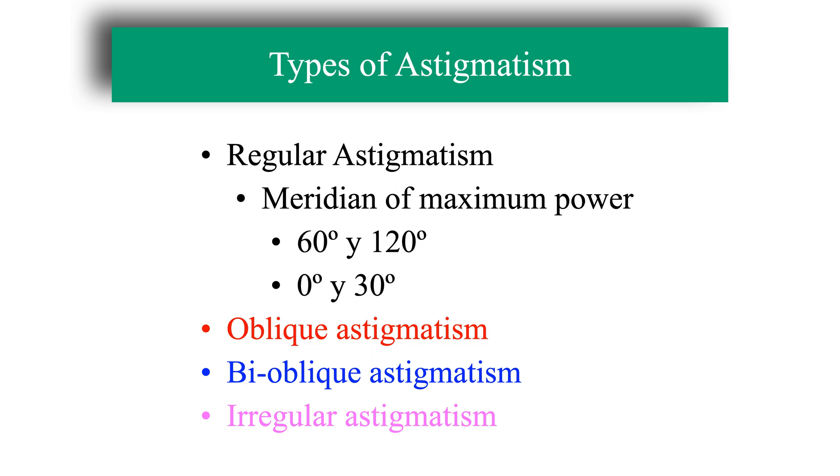Likewise, very rarely the curvature of the meridians is not regular. This is the case of irregular astigmatism, in which the refractive power is not the same in the various sectors of the same meridian. This astigmatism is produced pathologically in corneal deformations and will not be able to be compensated by means of lenses.